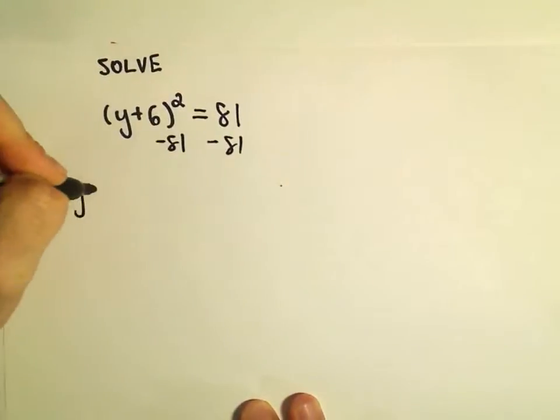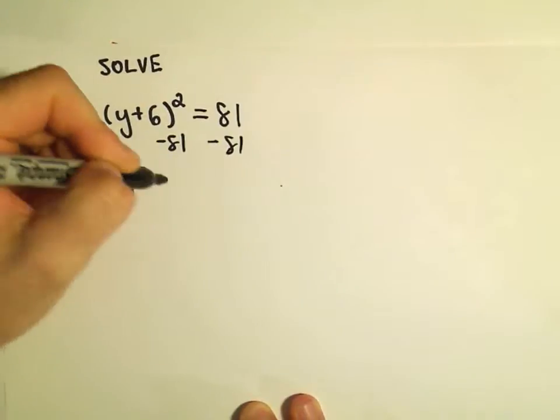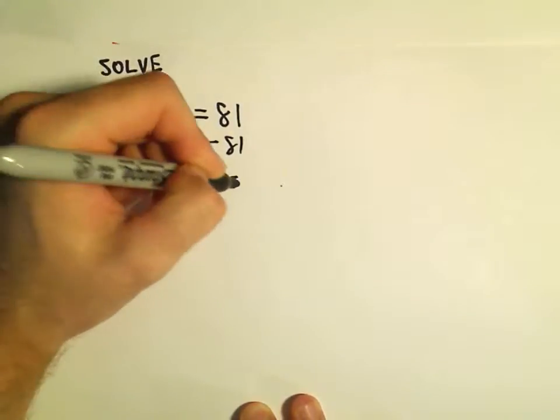So we've got the quantity y plus 6 squared, now minus 81 equals zero.